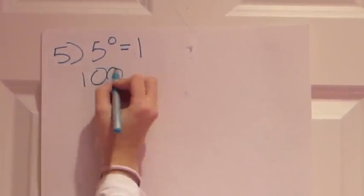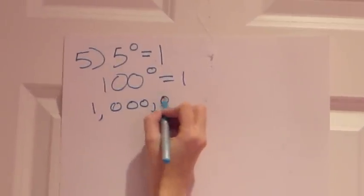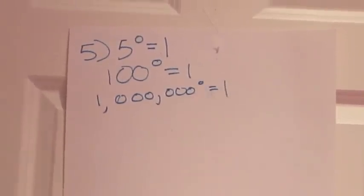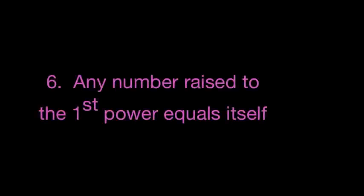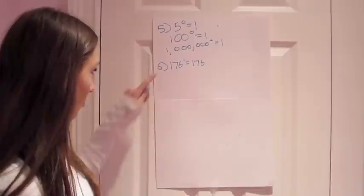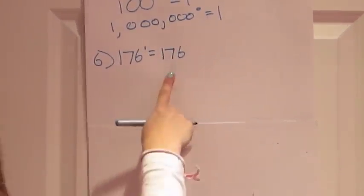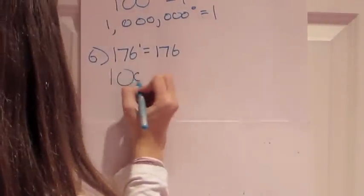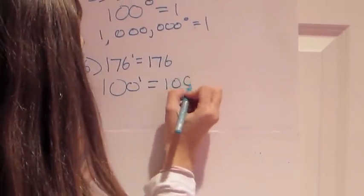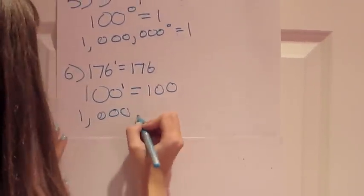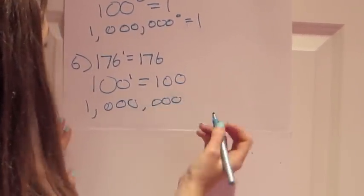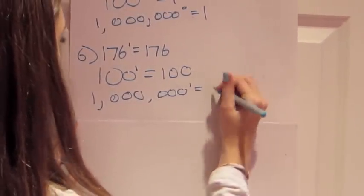The fifth rule states that any number raised to the zero power is 1. For example, 5 raised to the zero power equals 1, 100 raised to the zero power equals 1, and 1 million to the zero power equals 1. The sixth rule states that any number raised to the first power equals itself. For example, 176 raised to the first power equals 176. 100 raised to the first power equals 100, and 1 million raised to the first power equals 1 million.